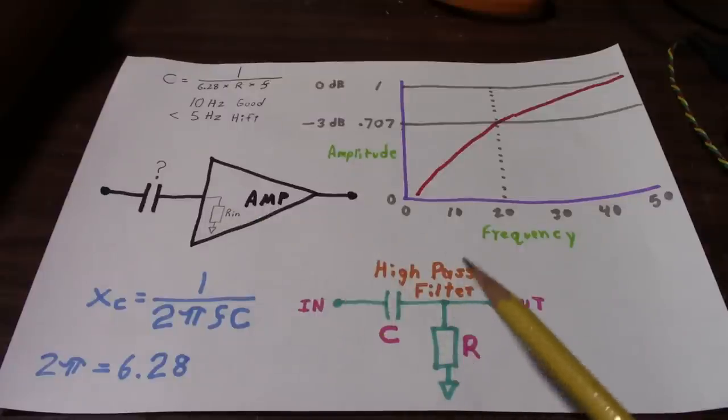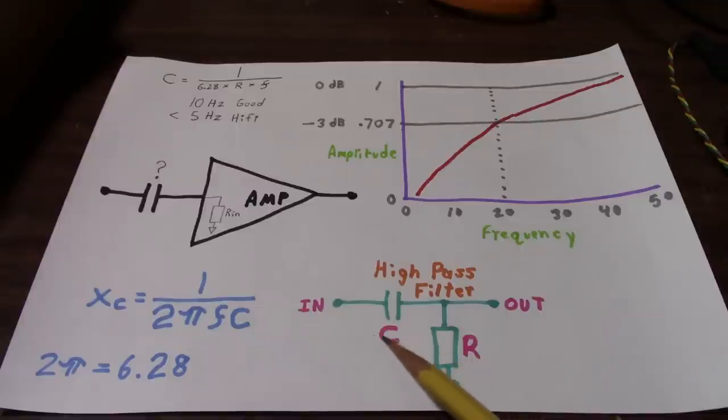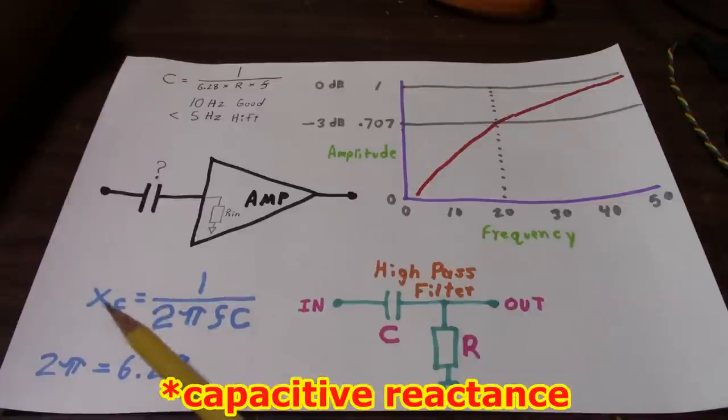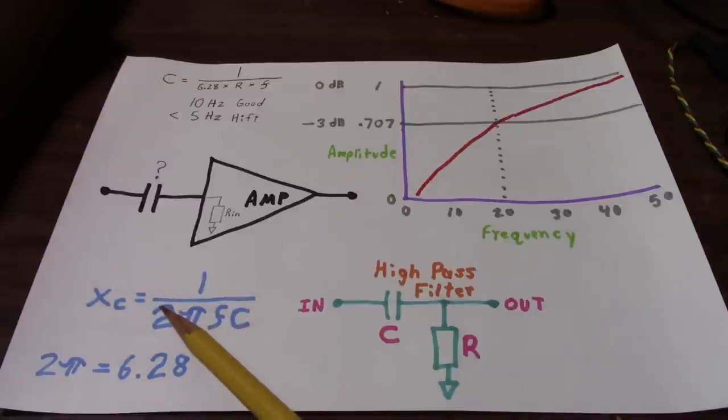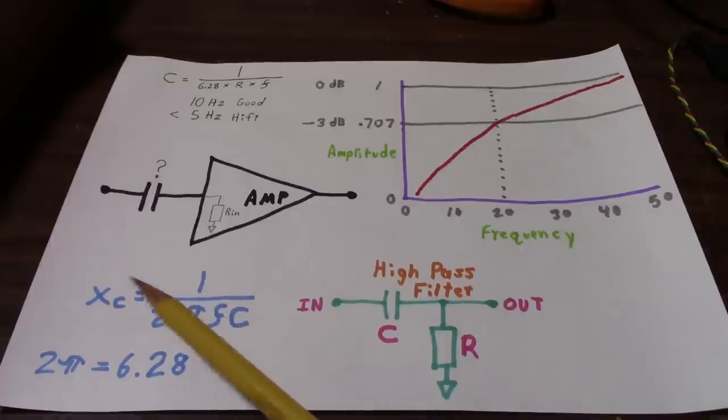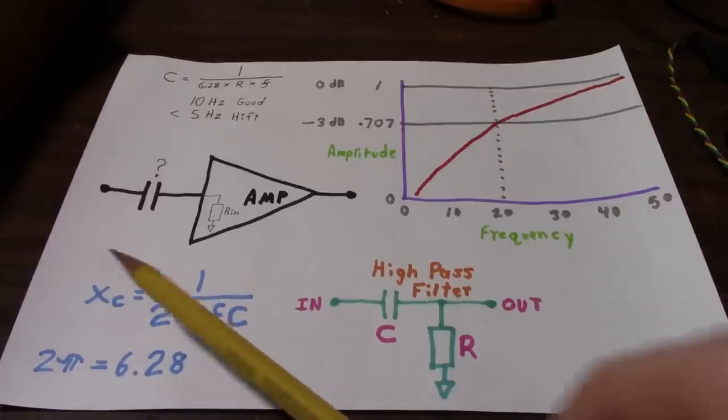So this is what a simple high-pass filter looks like. And we'll have the capacitor value and resistor value. Now in the case of selecting the capacitor, we don't know what this value is. And we will use the capacitor reactance formula to calculate that. And we'll have to rearrange it, but it's very easy to do, because you can just swap around our variables here.